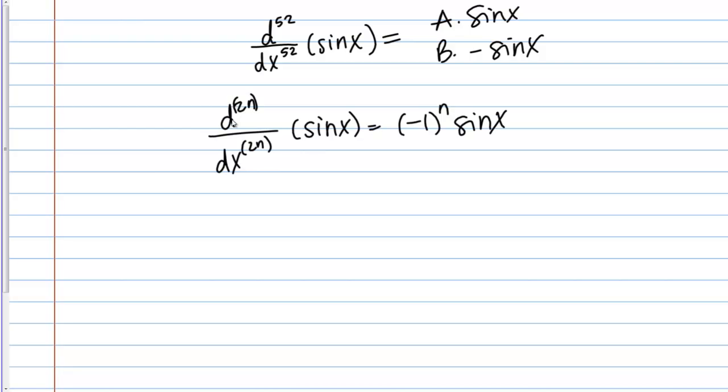The left side of this formula maybe looks a little funny. This is the derivative notation, but we have this 2N. All this is saying is the 2N order derivative of sine. For example, if I had this...